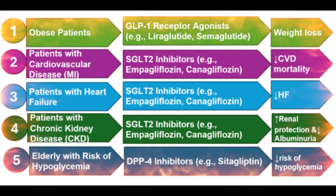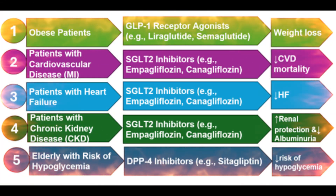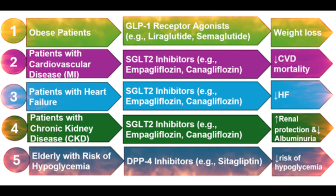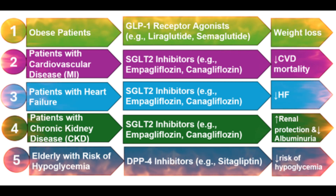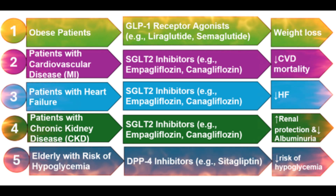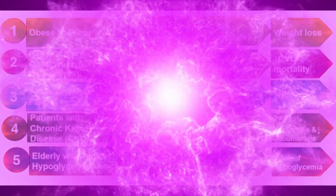Case 1 – Overweight or Obese Patients. The preferred drugs are GLP-1 receptor agonists, such as liraglutide and semaglutide. These drugs promote significant weight loss while improving glycemic control.